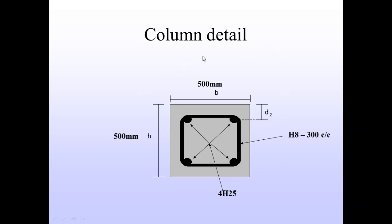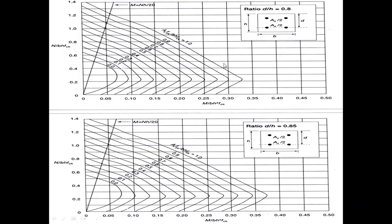We then draw the column detail with dimensions 500 × 500 mm, main longitudinal steel 4H25, and link bars of 8 mm diameter at 300 mm centre to centre spacing. This graph is used to calculate the area of steel for the column based on the ratio d/h of 0.85. That's all — thank you very much.